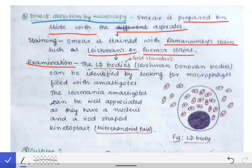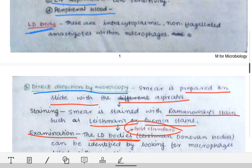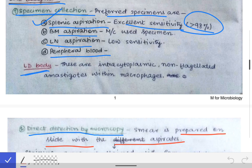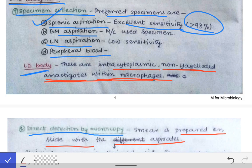In microscopic examination, we try to detect LD bodies, because detection of the LD body is the gold standard method for diagnosis of Kala-azar. The LD body is defined as intracytoplasmic non-flagellated amastigotes within the macrophages. This is the complete definition of LD body.